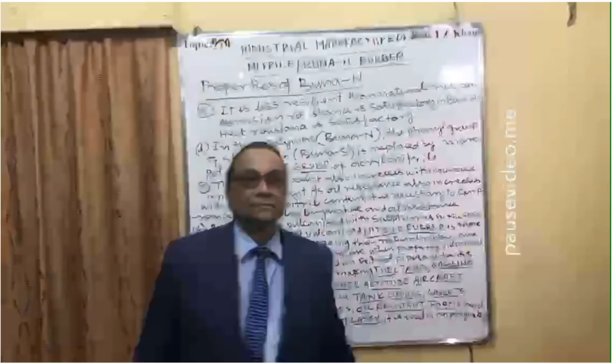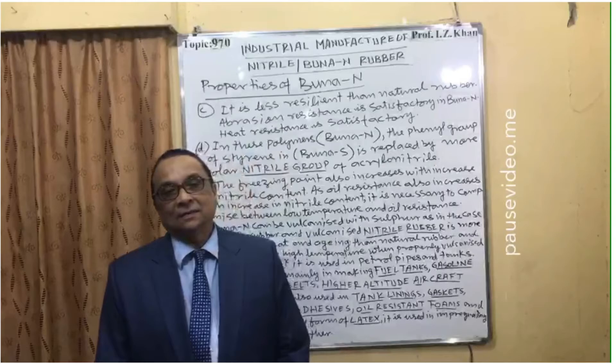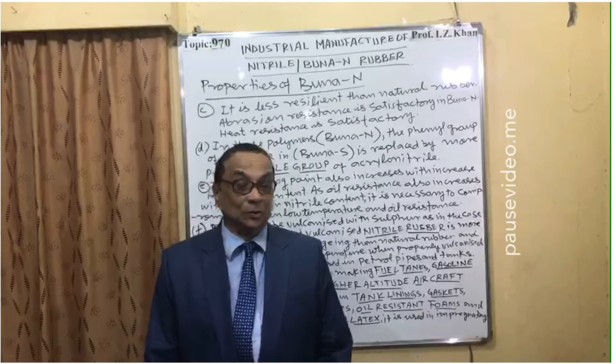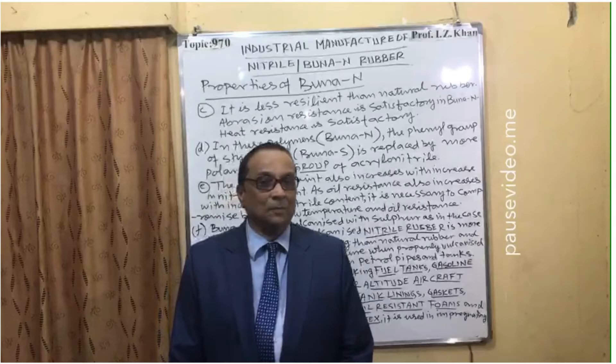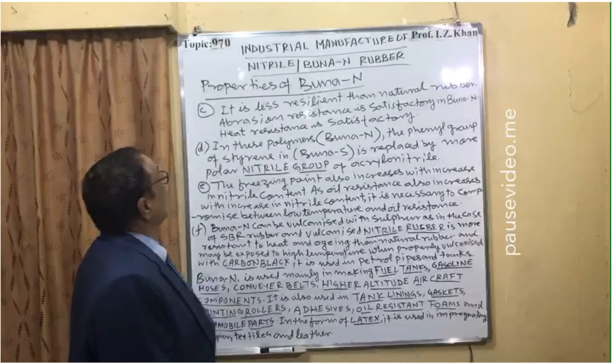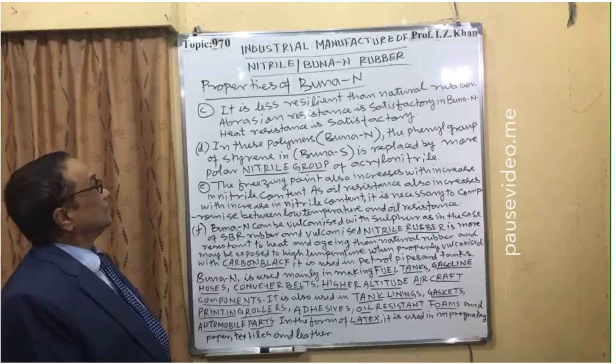Buna N or nitrile rubber is a very special type of rubber with many uses — in automobile industries, high-altitude aircraft industries, as an adhesive, and in the textile industry. It is a multi-purpose rubber, and continuing with its properties, it is less resilient than natural rubber, but abrasion resistance and heat resistance are satisfactory.